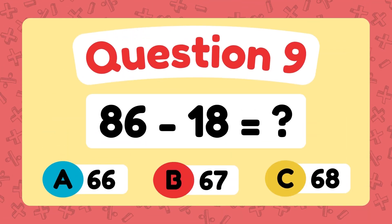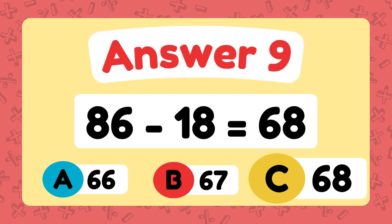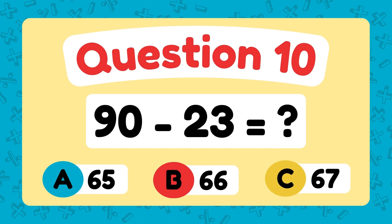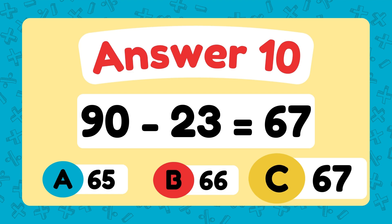What is 86 minus 18? The answer is 68. What is 90 minus 23? What is 84 minus 23? The answer is 67.